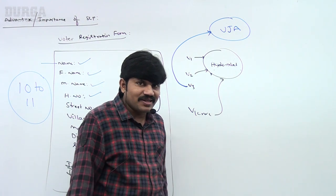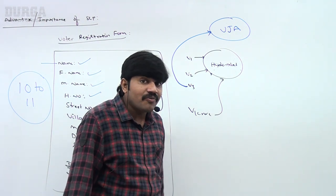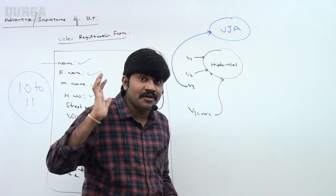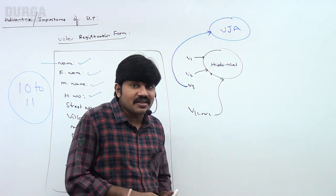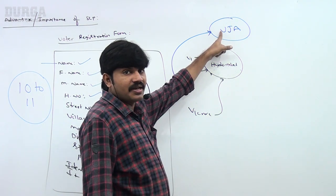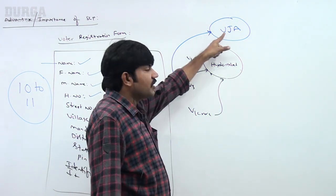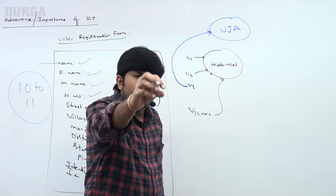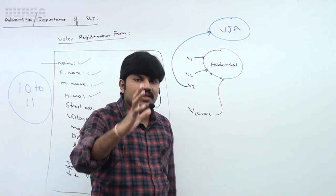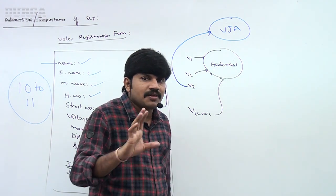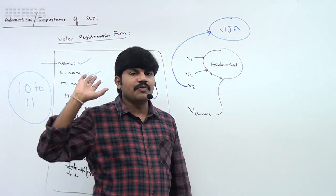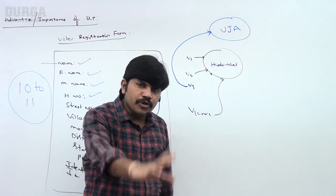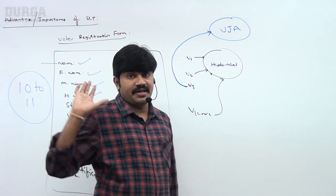So what is this behavior? Once we create a String object, we are not allowed to change the content. If by mistake you try to change the content, with those changes a new object will be created and that reference points to the new object. This concept is nothing but the Immutability concept. Why is immutability required? Just because of the SCP concept. If the SCP concept is not there — if the reusing-the-same-object concept is not there — immutability is not required.